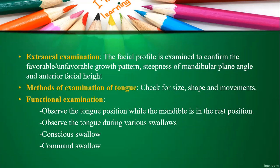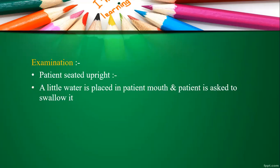On external examination, facial profile is examined to confirm favorable and unfavorable growth patterns — for example, steepness of the mandibular plane angle and anterior facial height. For tongue examination, check the size, shape, and movement of the tongue. For functional examination, observe tongue position while the mandible is in rest position, and observe the tongue during various swallows — conscious swallow and command swallow. The patient should be seated upright, and a little water can be placed in the patient's mouth to assess the swallowing pattern.